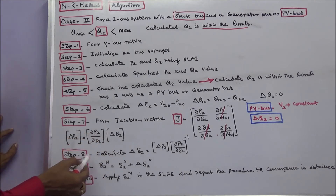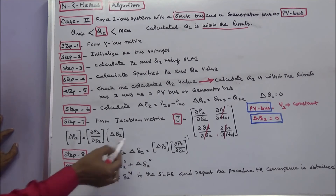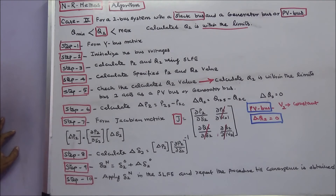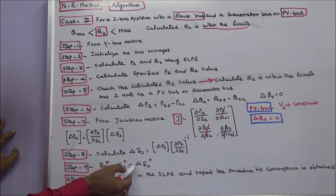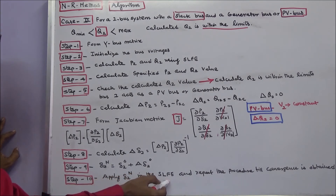Step 8: calculate change in delta 2 — that is ΔP2 multiplied by the inverse of the Jacobian. Step 9: calculate the new delta 2, which is equal to the old delta 2 plus change in delta 2. Step 10: apply the new delta 2 in the static load flow equation and repeat the procedure until convergence is obtained.